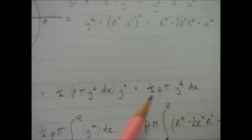Now you can see we've got y² and y² - that'll be y to the power 4, so I rewrite the thing here with ½ρπ y⁴ dx.